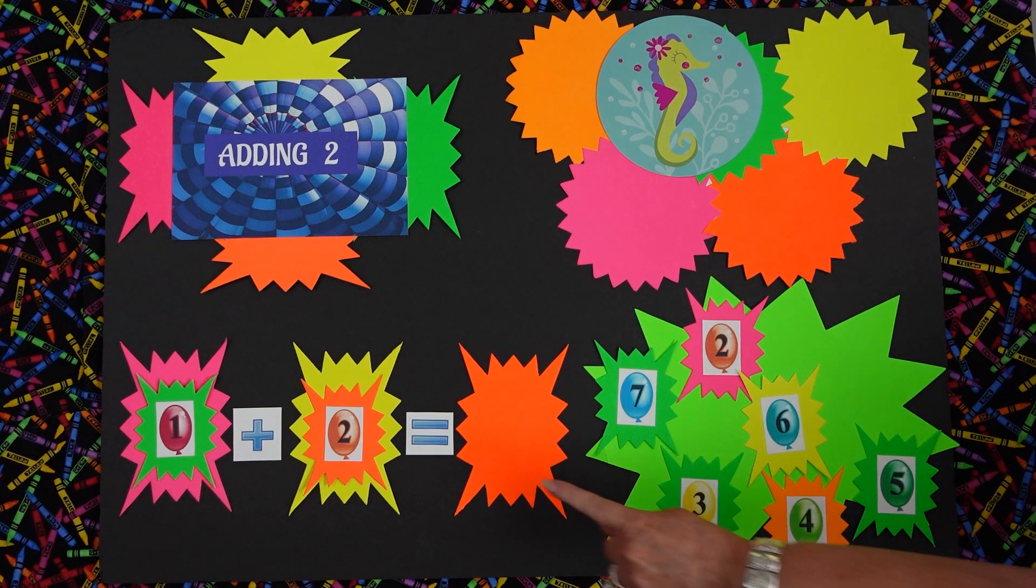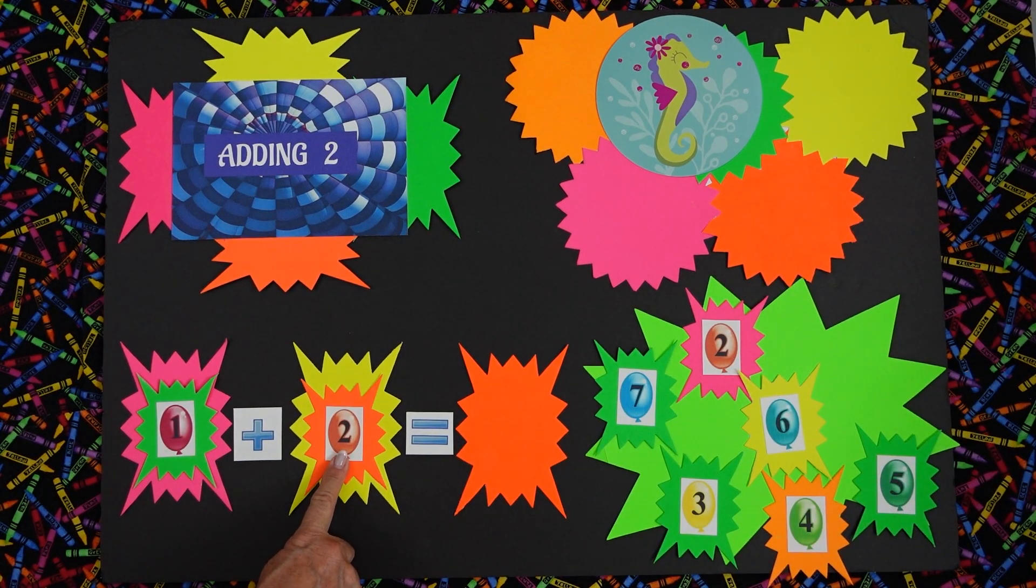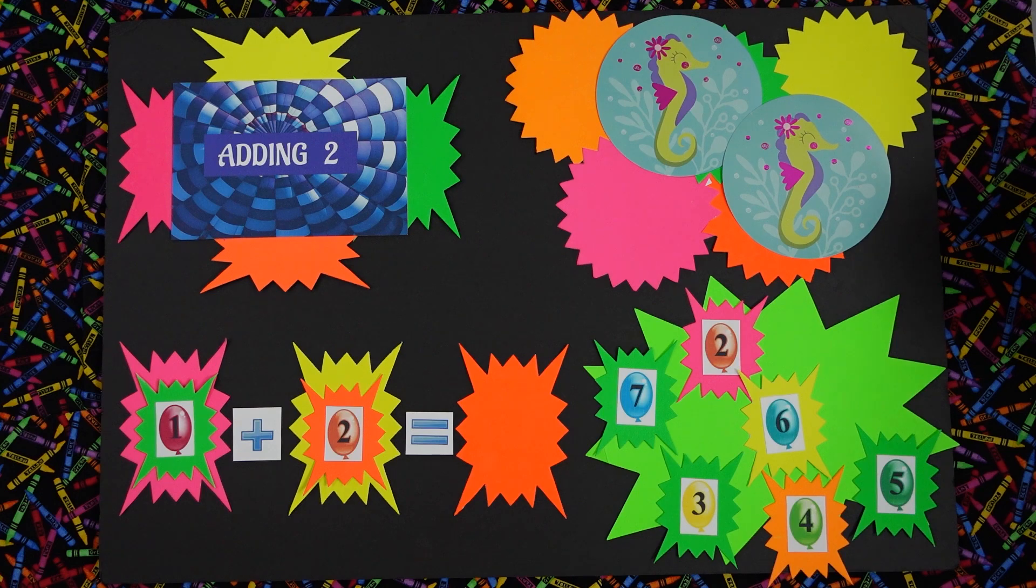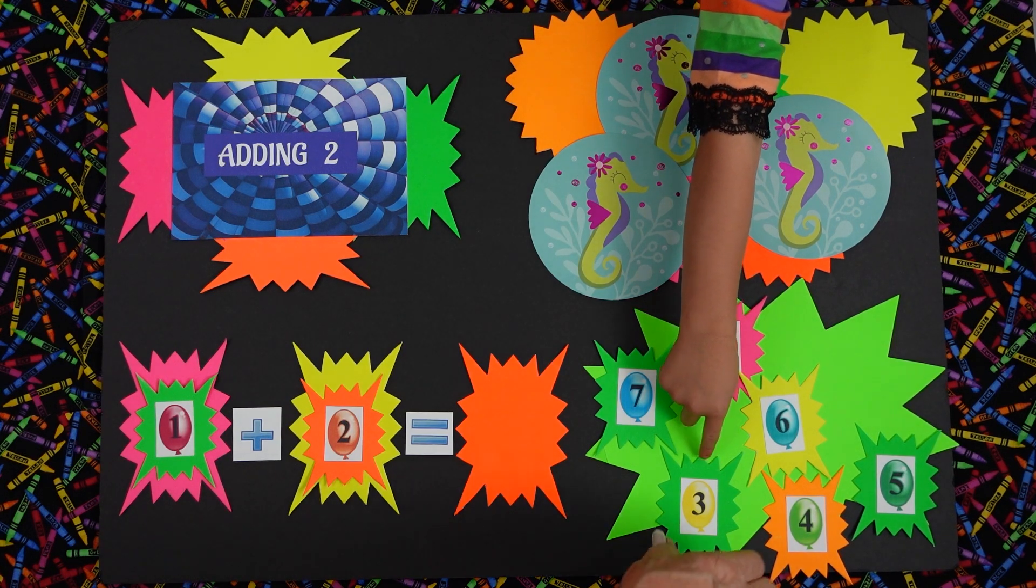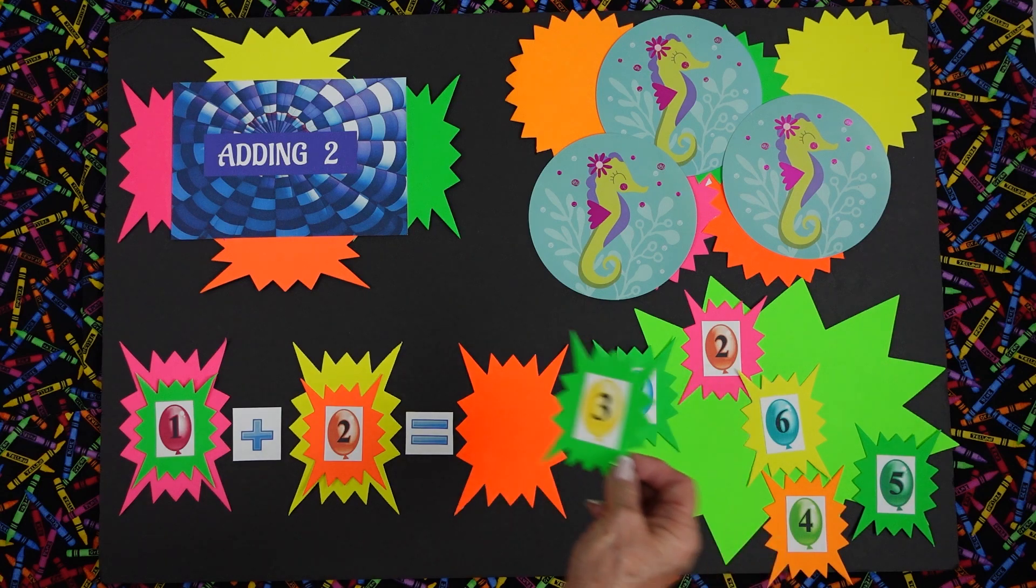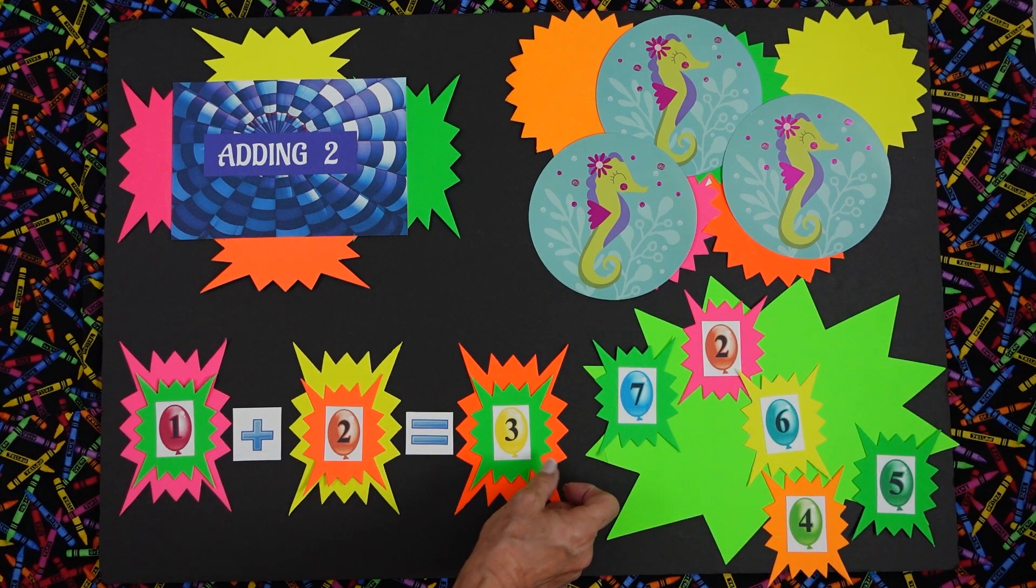Now Lily, how many are we supposed to be adding? Two. Two. One. Two. Now Lily, can you tell me how many we have all together? Three. We have three. Okay. Can you point to the three for me? Perfect. Does it go right here? Yes. Yes.